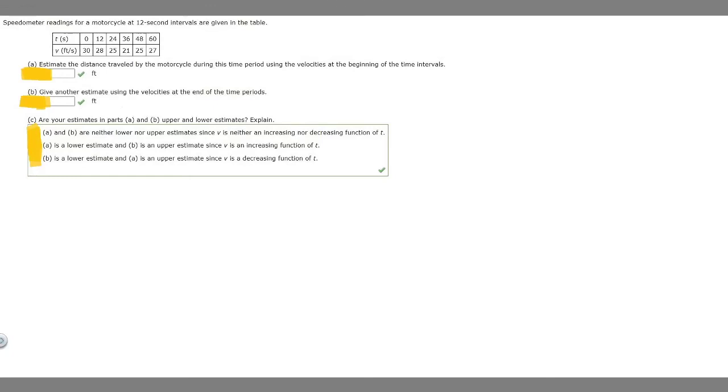In this problem we're told that the speedometer readings for a motorcycle at 12 second intervals are given in the table. For the first one we're told to estimate the distance traveled by the motorcycle during this time period using the velocities at the beginning of the time intervals.